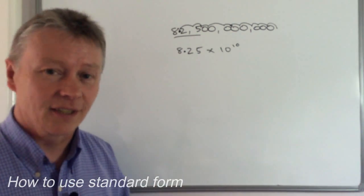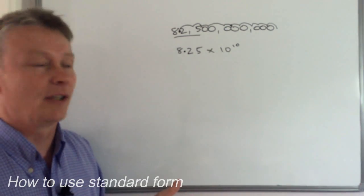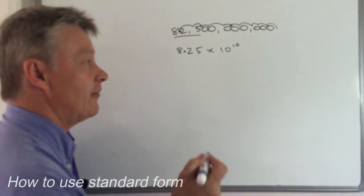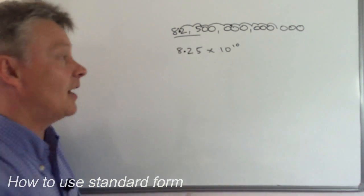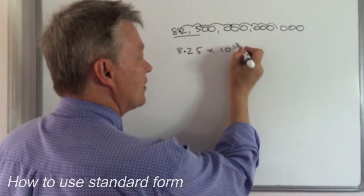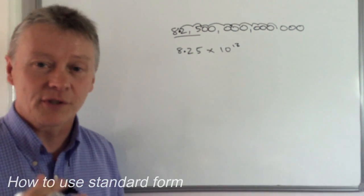So this particular method of writing standard form or the way that we write numbers is great. Because if I, for instance, had another three zeros at the end of that, I could just make that 13. Likewise, it also works for very small numbers as well.